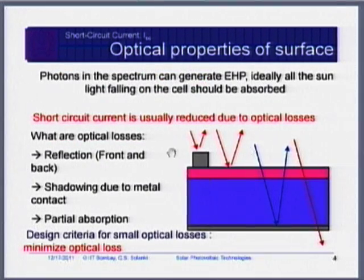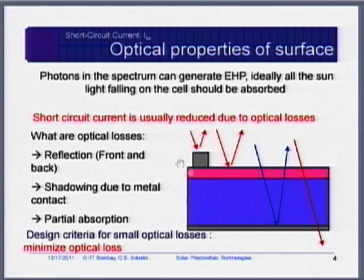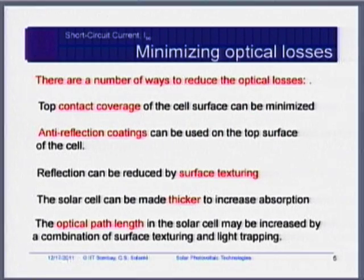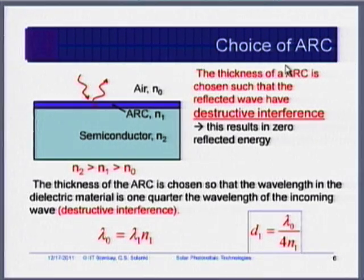Optical losses occur because of reflection from the front metal. The metal itself causes shadow losses by blocking light, and there is also transmission loss. We want to minimize these losses. The first thing to do is put what is called an anti-reflective coating. We want to minimize the light reflected from the front surface, and therefore we should apply anti-reflective coating, or ARC.